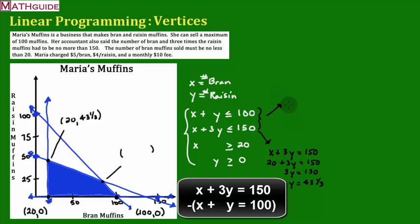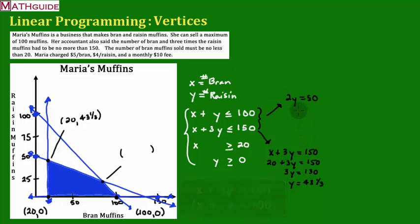You can plug this in a calculator. There's many ways to do this. But if you do exactly what I said, take x minus x, the x cancels. 3y minus y is 2y. 150 minus 100 is 50. So now we've got an equation with one letter. Now I'm going to divide both sides by 2 and I get the y value, y equals 25.